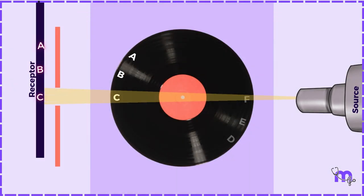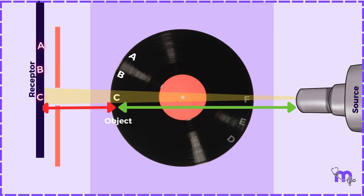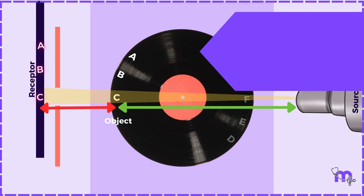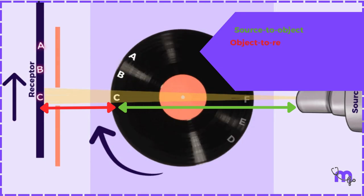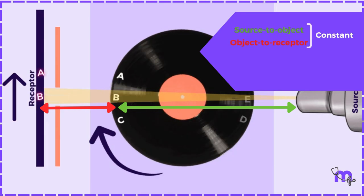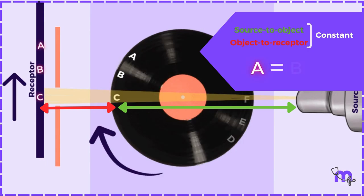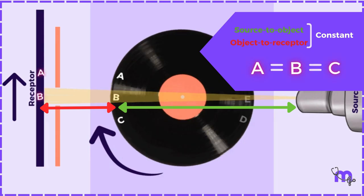An important point to note here is that the source to object distance is long and the object to receptor distance is short. With this, image magnification and unsharpness are minimized. Since the source to object distance and the object to receptor distance remain constant during rotation, objects A, B, and C get equally magnified.